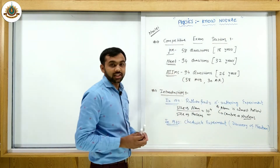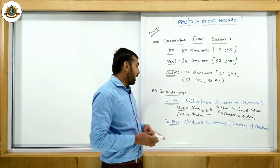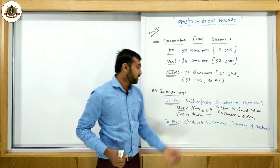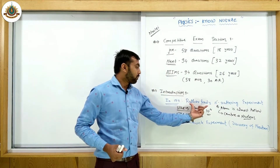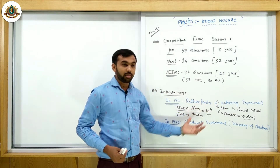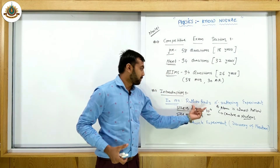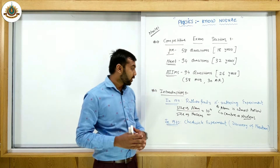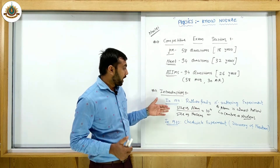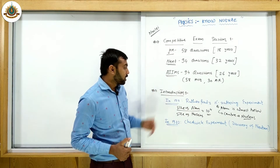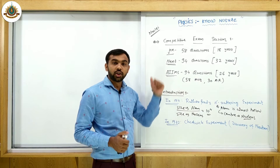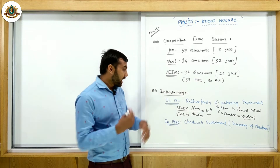This center is named the nucleus. The name 'nucleus' comes from the alpha scattering experiment performed by Geiger and Marsden, which was explained by Rutherford. This is the key experiment that gave us the name 'nucleus.'